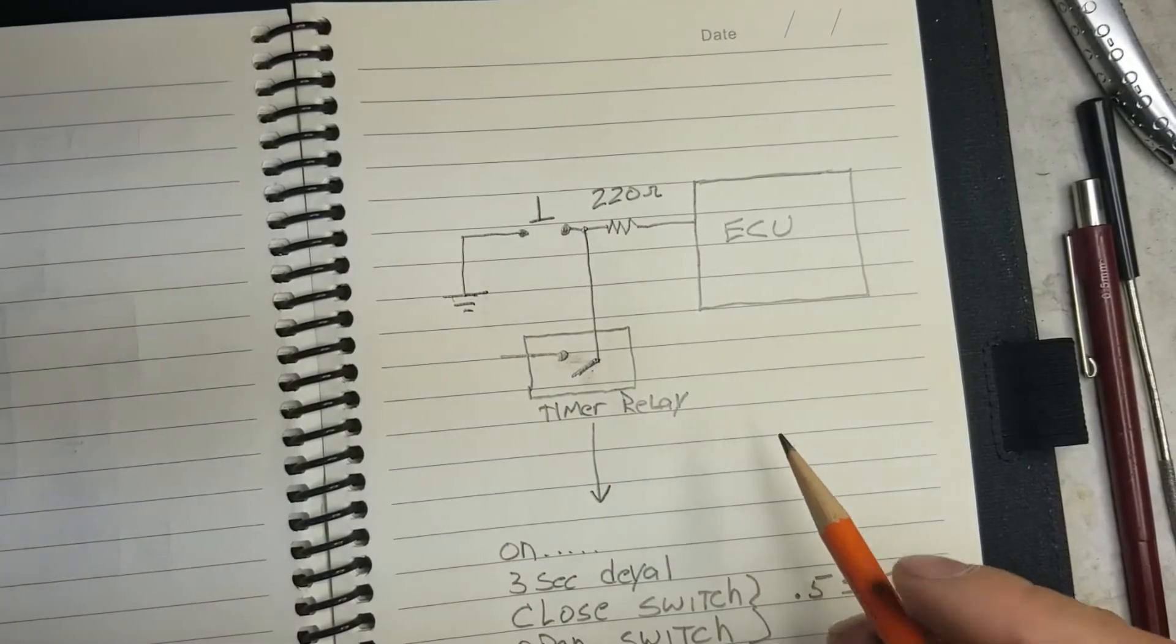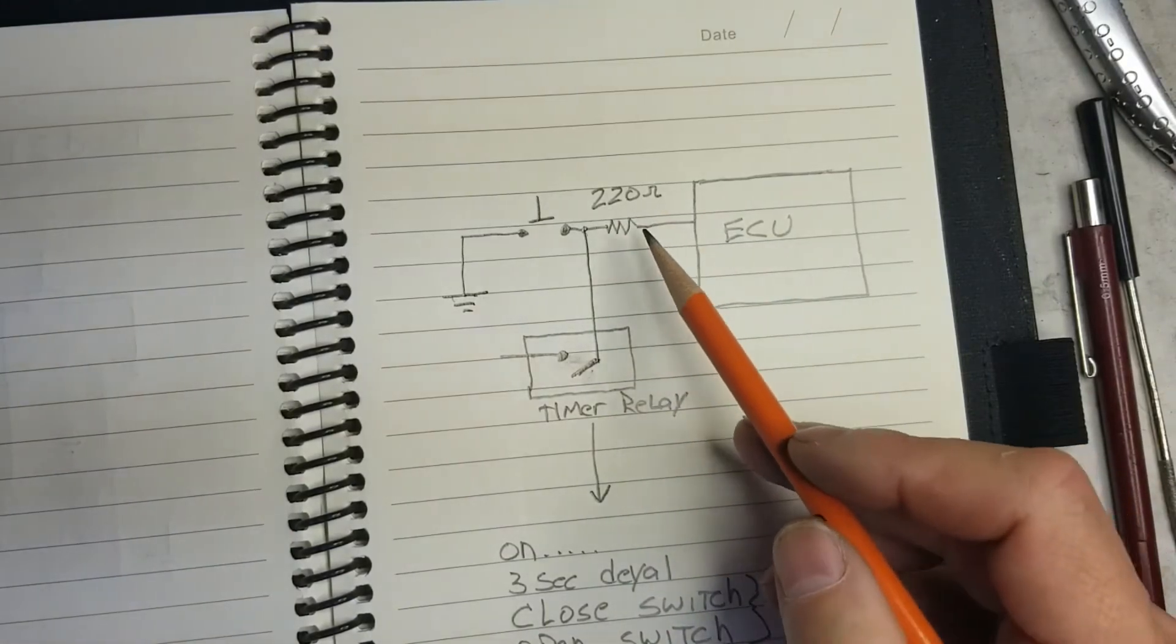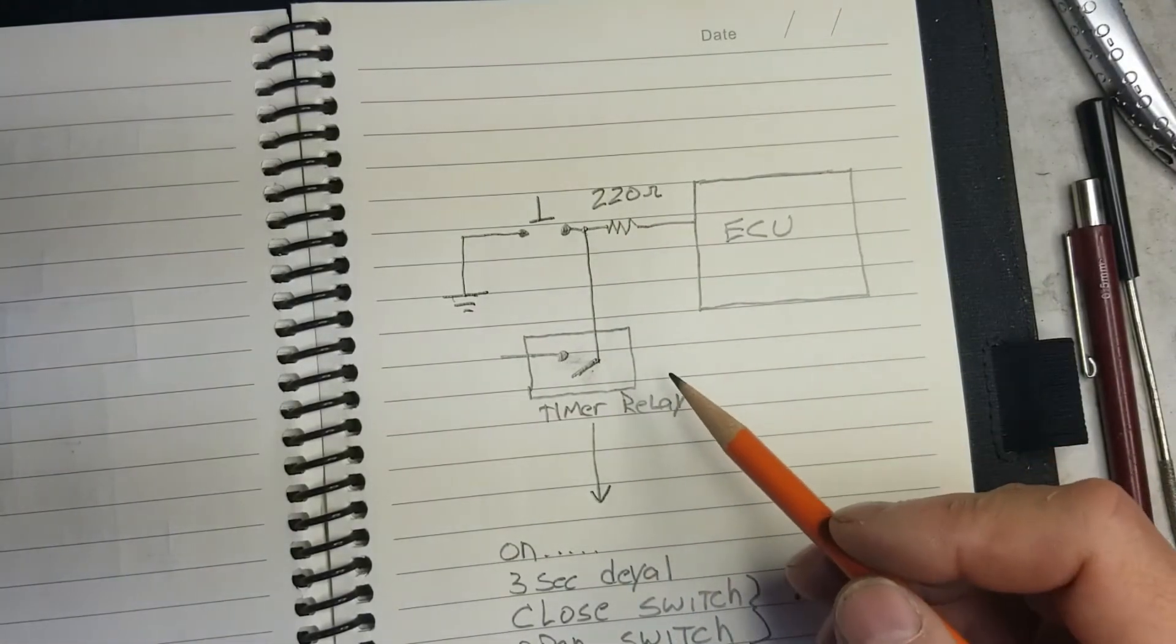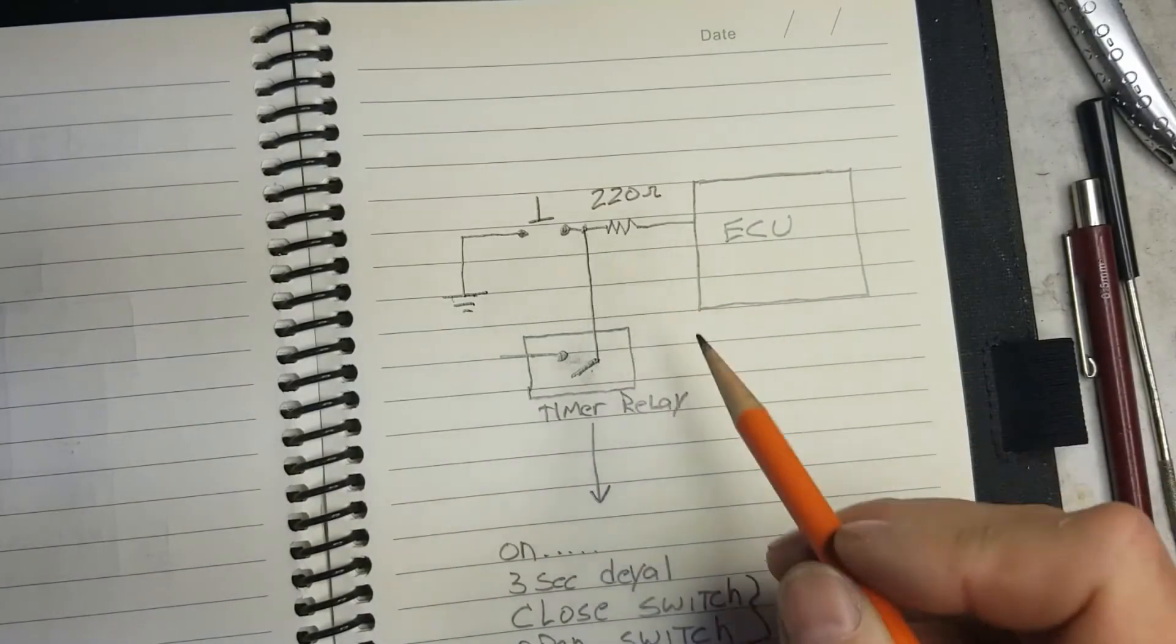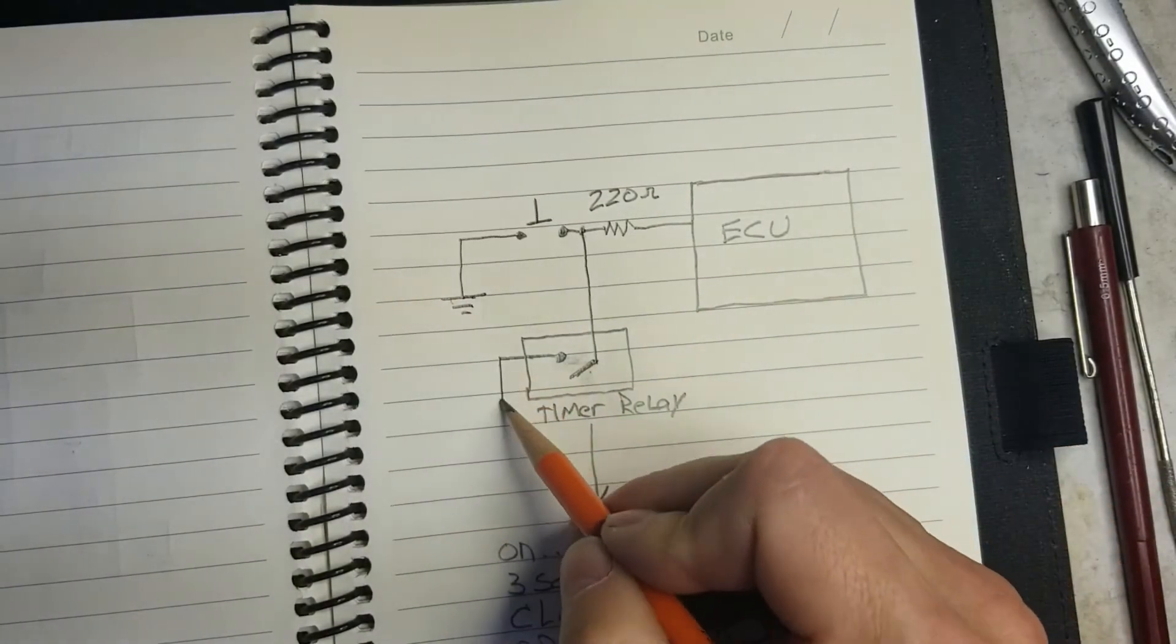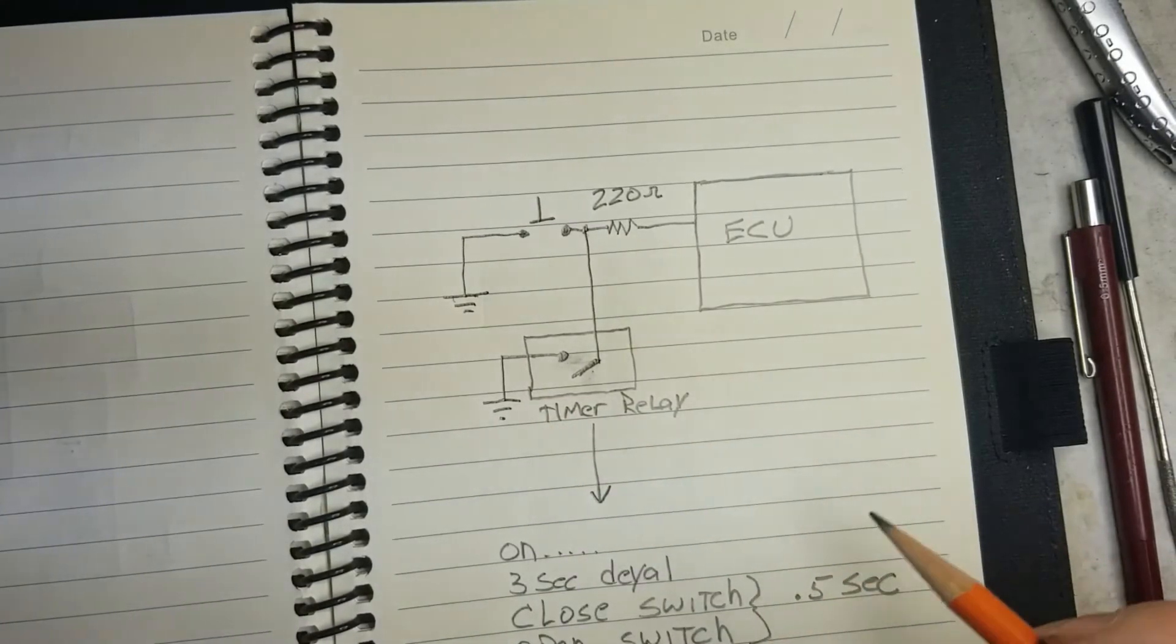I've already got it sorted out. It tests out fine. Same circuit. You've got your ECU. There's a 220 ohm resistor built into there. But what I'm going to do is I'm going to intercept this signal using a timer relay and I've got the timer relay. It's already bought. It works great and it's programmable.